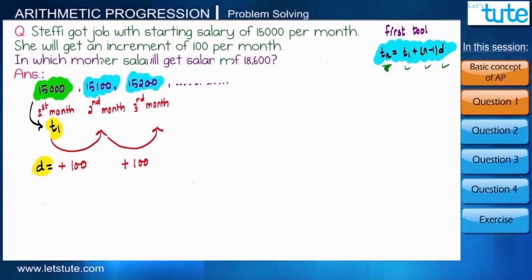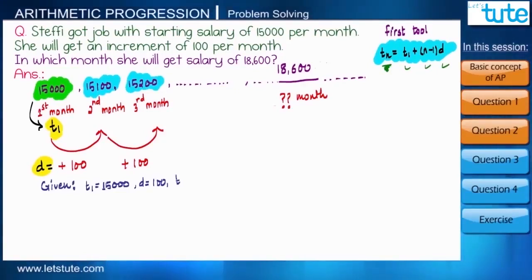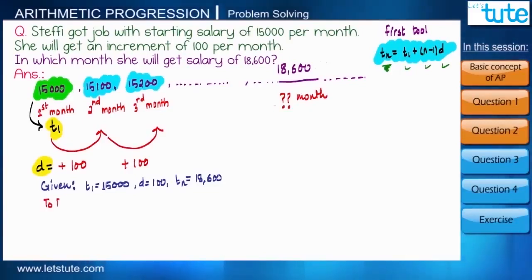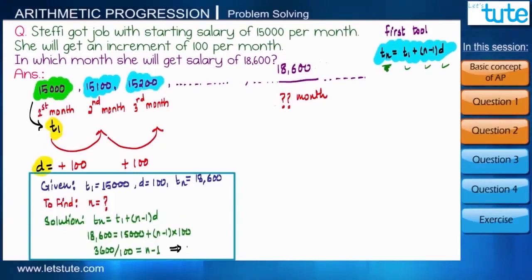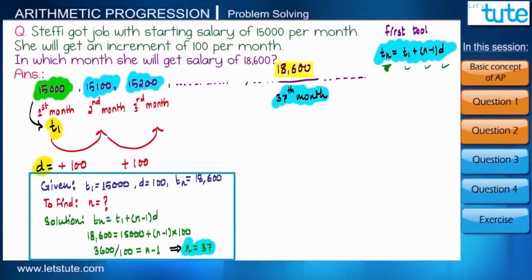Now let me twist the question a little bit. In which month will her salary be 18,600? Here t1 and d remain the same, but this time the value of the term is given — tn equals 18,600 — and the position n is what we need to find. By substituting the values, we get n equals 37, meaning she will get 18,600 in the 37th month.